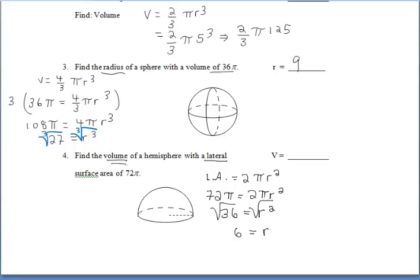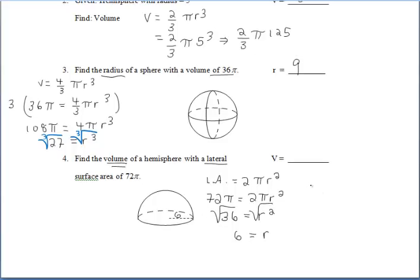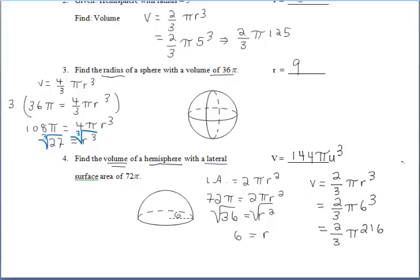Now that we know the radius of our hemisphere is 6, we can find the volume. Using the formula 2 thirds pi r cubed, since we're working with a hemisphere, we know that our radius is 6, so we're substituting in 6 for r. Don't forget you're cubing the 6 to get 216, then multiplying that by 2, and then dividing that number by 3, which leaves us with 144 pi units cubed for the final answer.